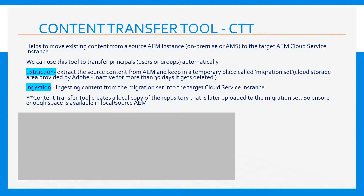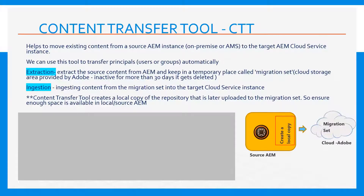The Content Transfer Tool creates a local copy of the repository that is later uploaded to the migration set, so ensure enough space is available in the local or source AEM. You can see a pictorial representation here. We have the source AEM. The Content Transfer Tool creates a local copy first. This data gets stored into a temporary place called migration set, which is provided by Adobe, and later on this gets moved into a cloud AEM.